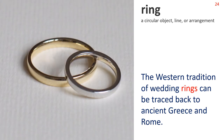Ring — a circular object, line or arrangement. The Western tradition of wedding rings can be traced back to ancient Greece and Rome.